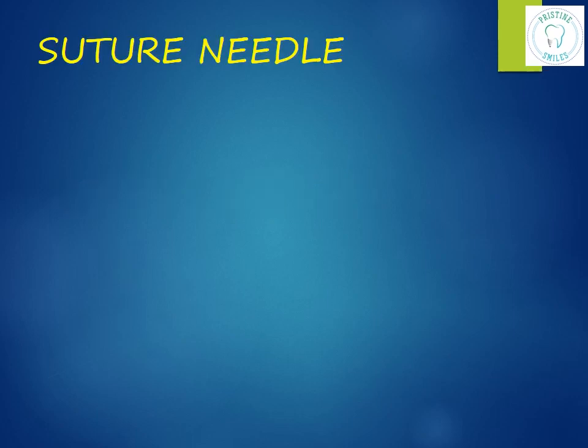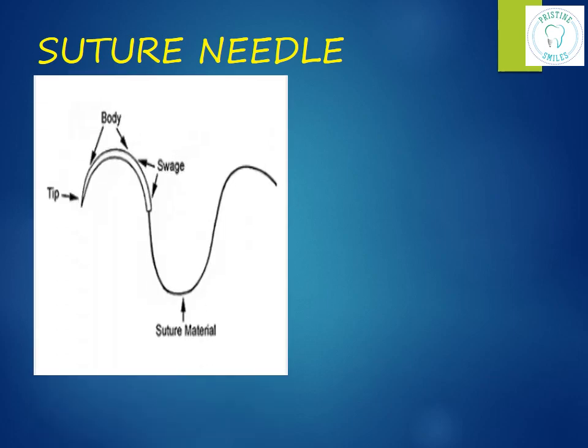The main purpose of a needle is to carry the suture material through the tissue with minimal injury to the tissue. The anatomy of the needle has three parts: the swage, the body, and the tip or the point.